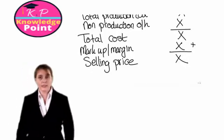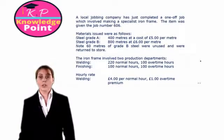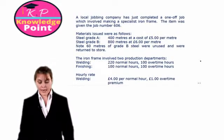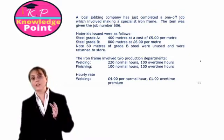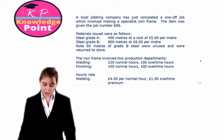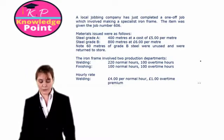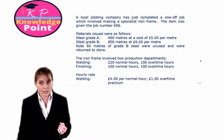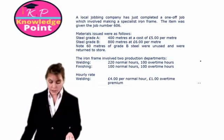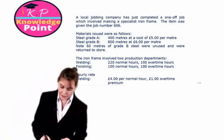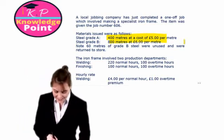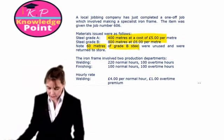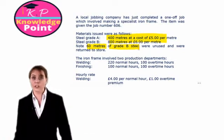Let's have a look at an exercise so we can put this into practice. We're told a local jobbing company has just completed a one-off job, which involved making a specialist iron frame unique to customer specification. The item was given job number 606. The materials issued to the job — these will be the direct material costs associated with the job — there were two types of steel, A and B, and we're given the quantity used and the cost per metre. But 60 metres of grade B steel were unused and returned to store.